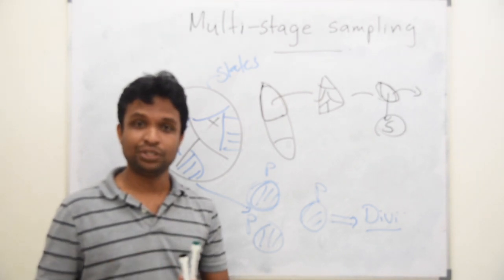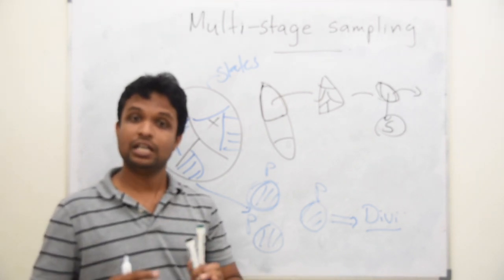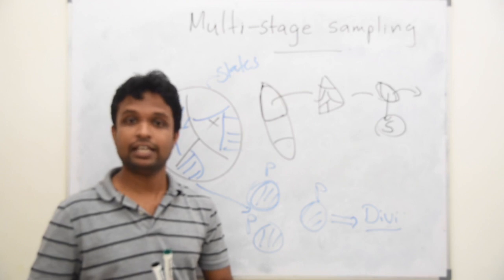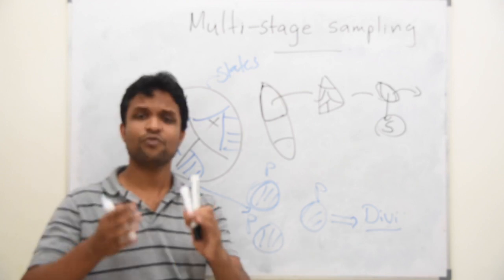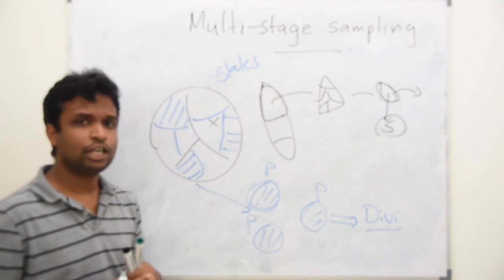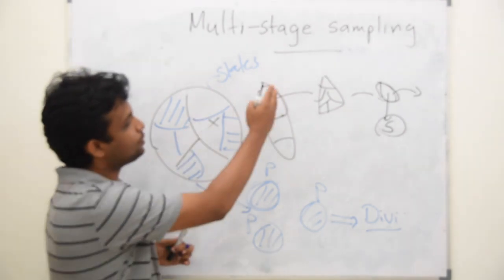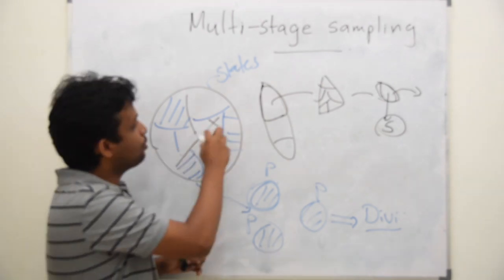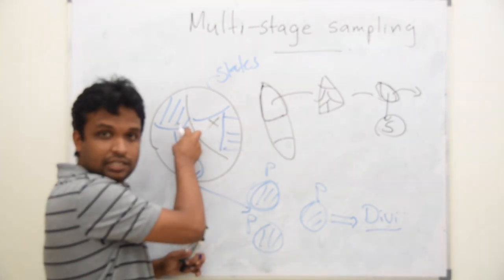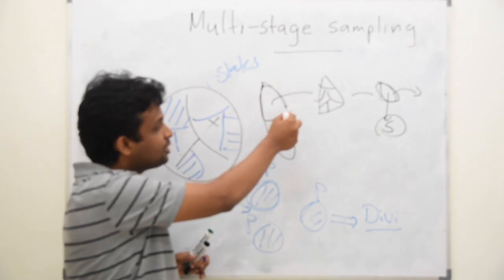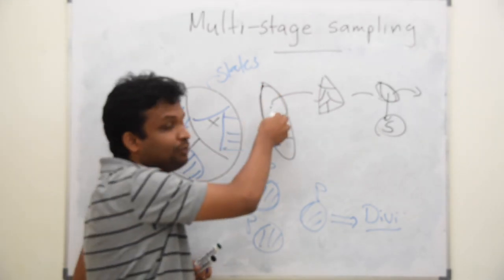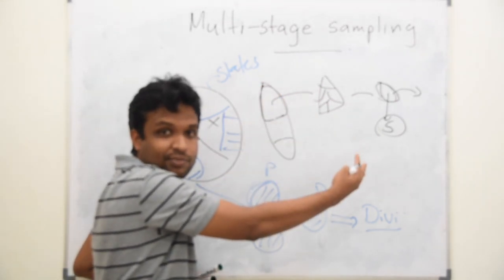However, we are using these techniques for large scale surveys and large scale studies. One more important thing is, you can combine several sampling techniques for this procedure. You may be selecting provinces from states using simple random sampling, and from this to here, stratified random sampling.